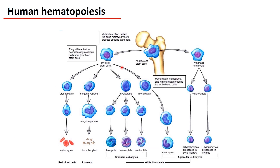In the adult human, hematopoiesis is going on in the diaphysis of the bone, in the red bone marrow. Here we can find pluripotent stem cells that during division are going to divide into the myeloid stem cells and the lymphoid stem cells very early. From the myeloid stem cells,